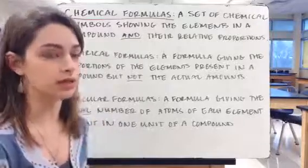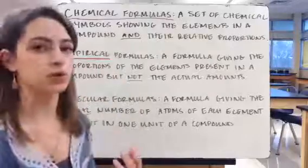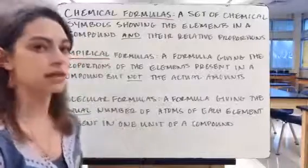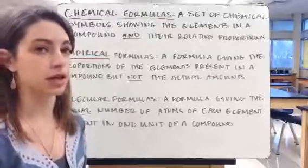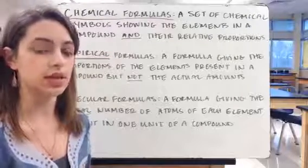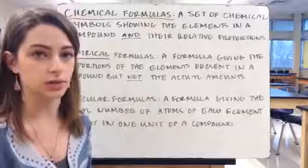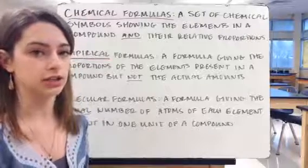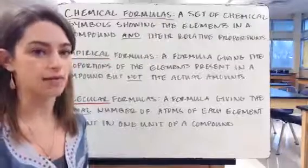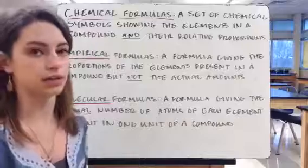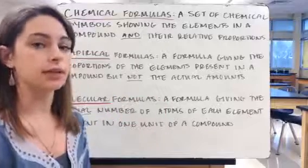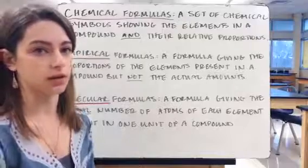We have two types of chemical formulas. An empirical formula is the most reduced-down formula for a compound — it gives the proportions of the elements, not the actual numbers. For example, you could have an empirical formula of CH, but in actuality have C₆H₆: six carbons and six hydrogens, which reduce to a one-to-one ratio. The molecular formula, on the other hand, gives the actual amounts of atoms of each type of element present in one unit of a compound.